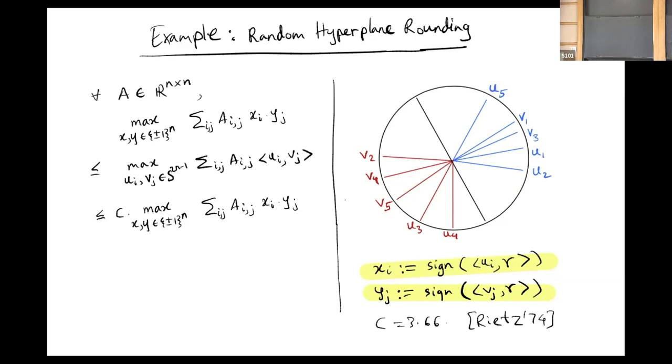Intuitively, why would you think of this as a good rounding strategy? Whenever UI and VJ have correlation close to plus one, we want XI and YJ to have the same sign. Whenever UI and VJ have correlation close to minus one, we want XI and YJ to have opposite signs. Indeed, if UI and VJ are close to minus one in correlation, they're almost antipodal, so a hyperplane is likely to give them opposite signs. Similarly, if they're close in correlation, the hyperplane is likely to have them on the same side.